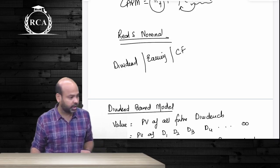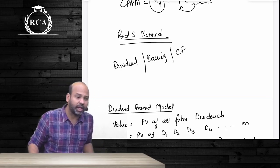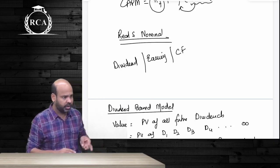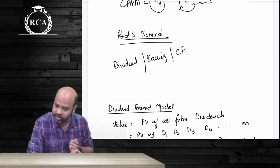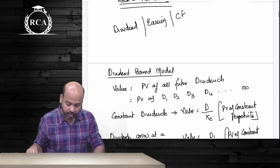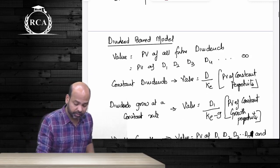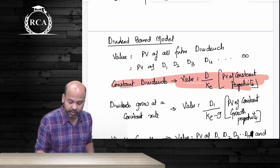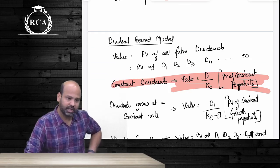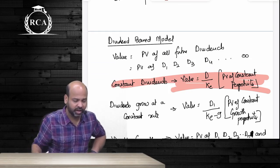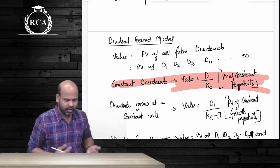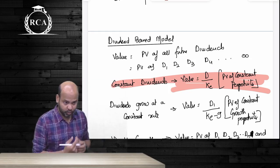Under the dividend model, the value of an equity share is simply equal to the present value of all future dividends. There are three cases. First, if the company pays a constant amount of dividend year after year, the value of the equity share will equal the present value of a constant perpetuity — that is, dividend divided by the cost of equity (D/KE).